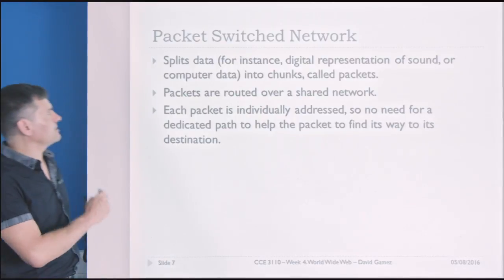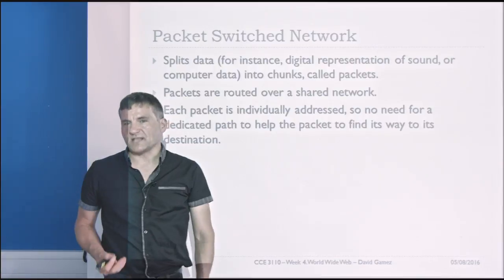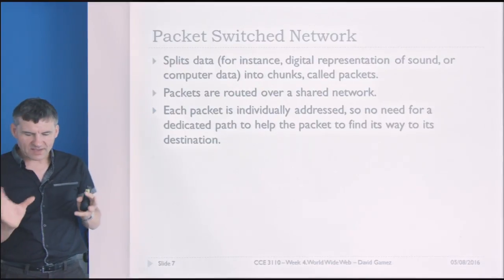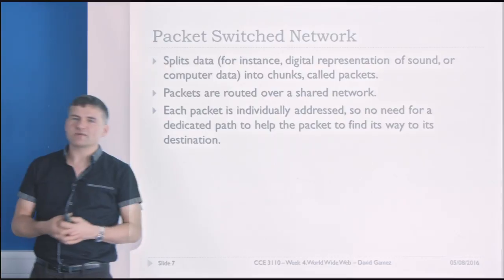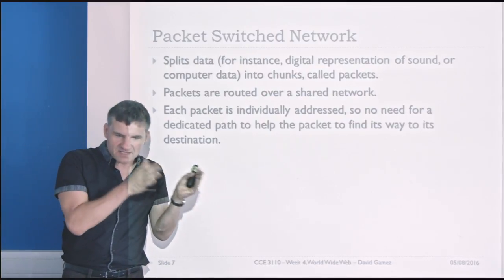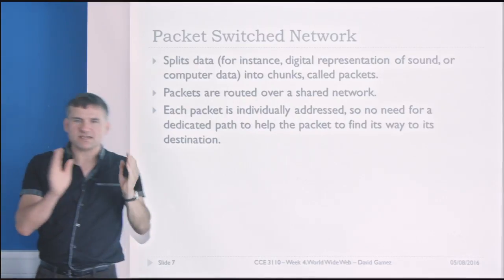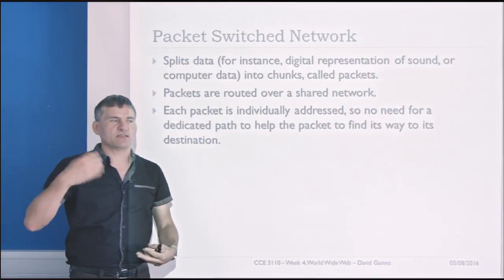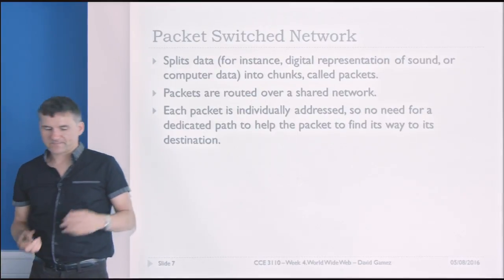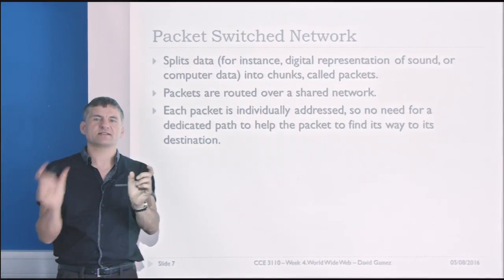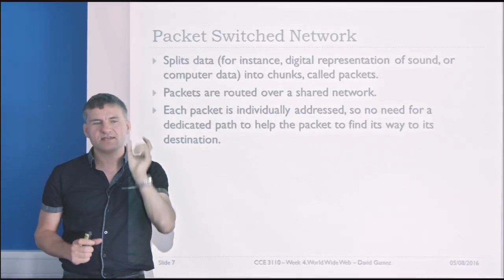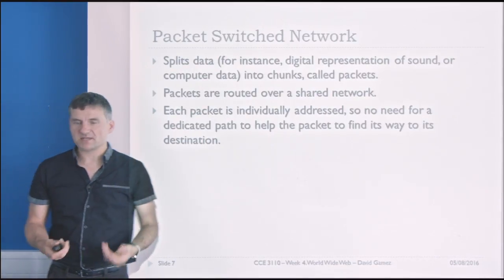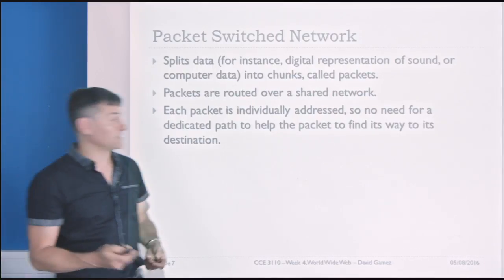The key thing about the Internet is it's a packet-switched network — the key innovation that made it possible and makes it work so well today. Suppose you've got a big file or big document. What you do is split that data up into a number of separate chunks. You give each chunk a little header saying where it needs to go, then route all of the chunks over the shared network that everybody else is using, and those packets are eventually routed towards their destination. Each packet has a header specifying where it's from, where it's going, maybe its size, a checksum to ensure it hasn't been corrupted, and information to ensure all packets reach their destination together.